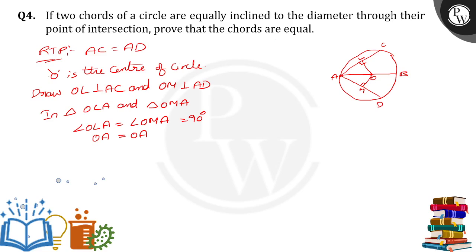Next one, they both are equally inclined to the diameter. That means angle OAL is equal to angle OAM. It's already given to us. So from which congruence? AAS congruency criteria.